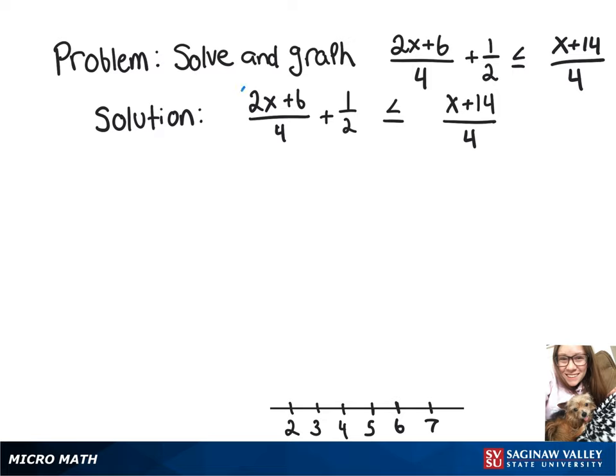So to start off, to get rid of the fractions and make it a little easier to work with, we're going to multiply both sides by 4. That's going to leave us with 2x plus 6 plus 2 is less than or equal to x plus 14.